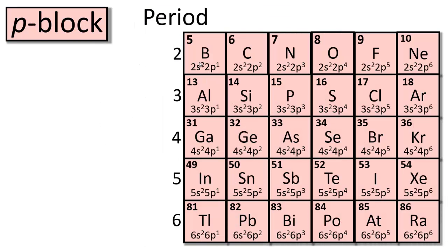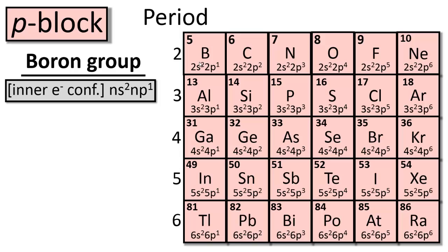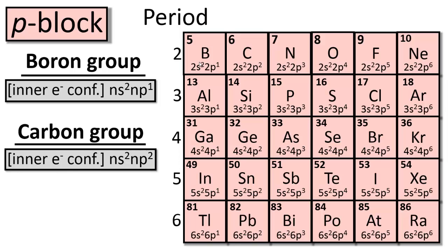Let's move on to the p-block elements, which include the six groups that are found on the right-hand side of the periodic table. In the case of the elements in the boron group, the electron configuration is the inner electron configuration plus ns² np¹. For elements in the carbon group, it's the inner electron configuration plus ns² np².